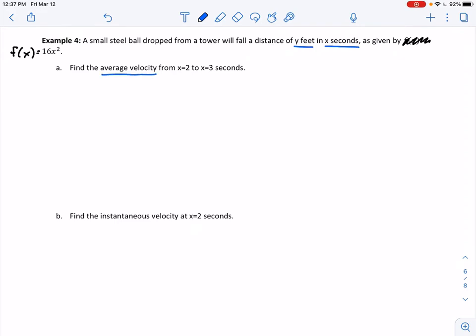When we talk about average velocity, another way to interpret that is as the average rate of change, which is the same thing as the slope of the secant line. For this first part, we're going to use the formula we used earlier in this section: f(b) - f(a) divided by b - a.